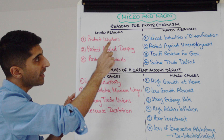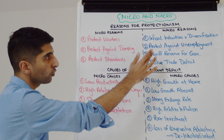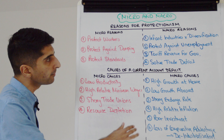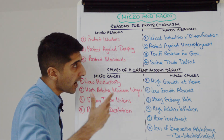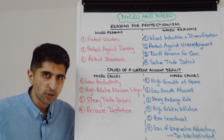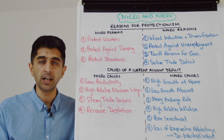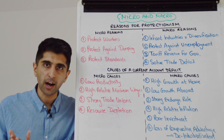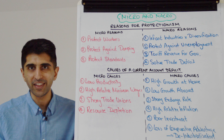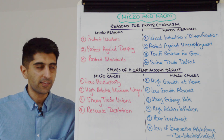Protect against unemployment — so instead of going to the individual impact of protecting workers and jobs, you can talk about protecting unemployment as a macro objective. You can also talk about tariff revenue for the government as tariffs are used, and you can talk about solving a trade deficit through less import expenditure, linking that to the current account deficit position. Very simple — just a different style of question, that's all.